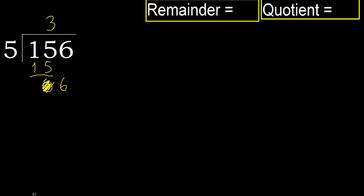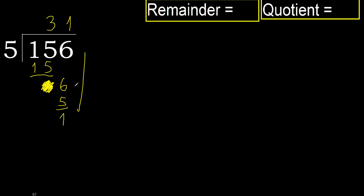Eliminate 0 on this side, bring down 6. 5 multiply by 2 is 10 — 10 is greater. Multiply by 1 is 5 — 5 is not greater. Subtract, remainder is 1.